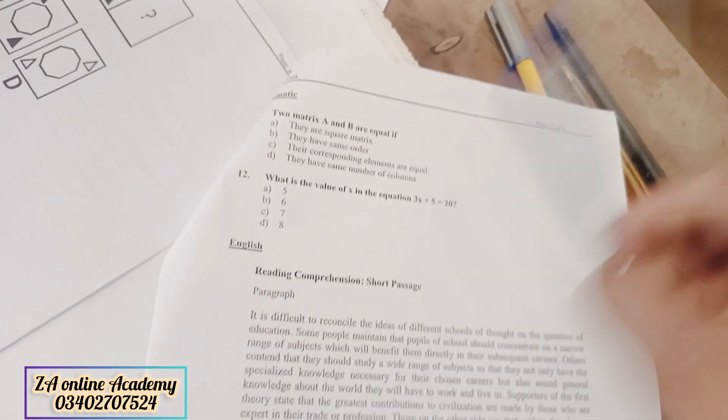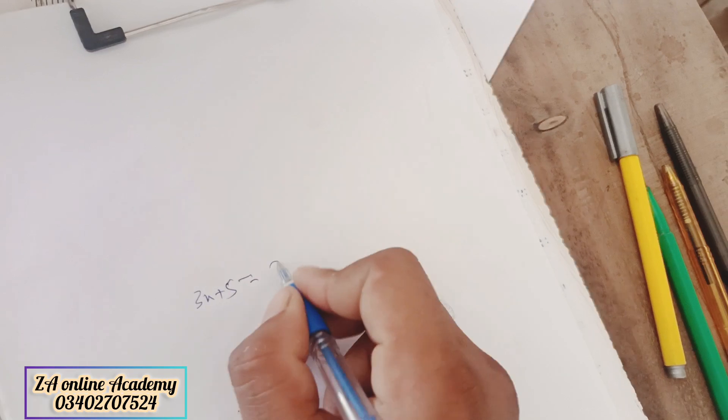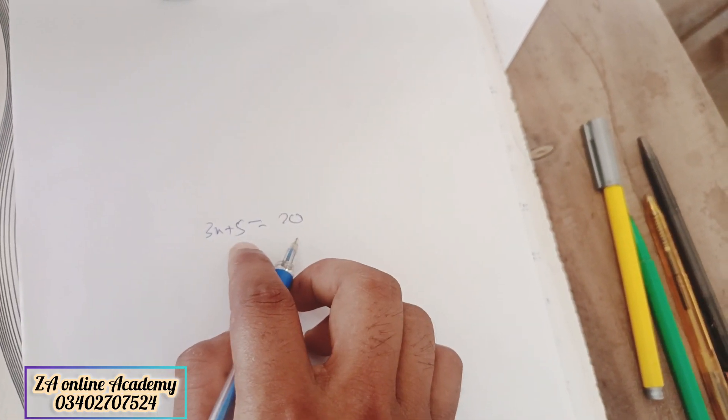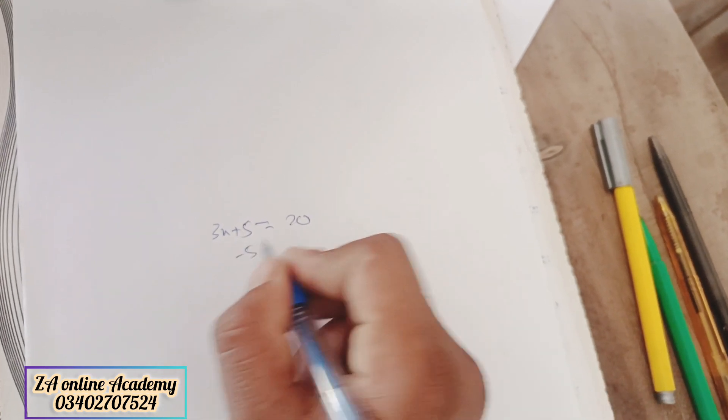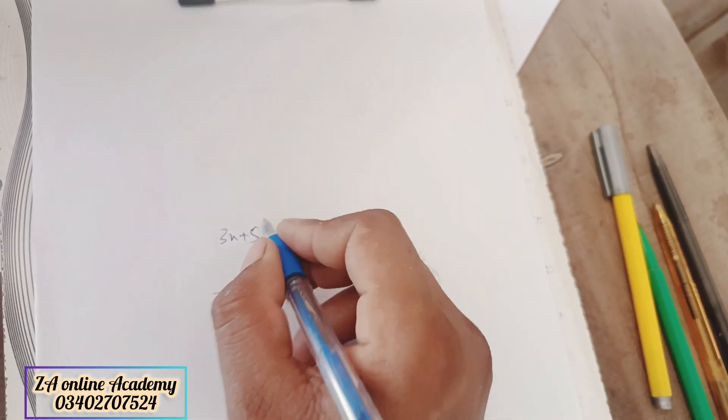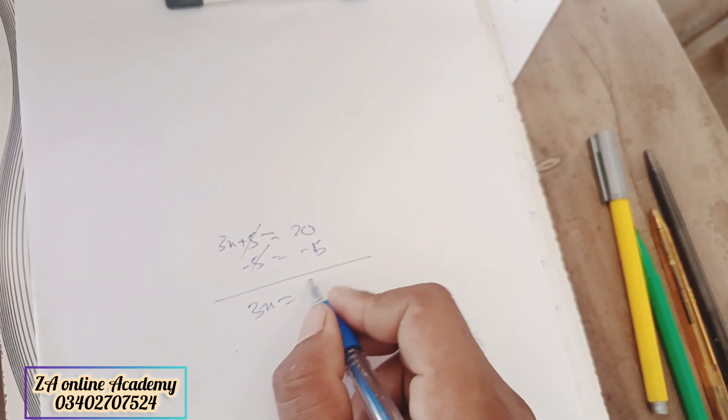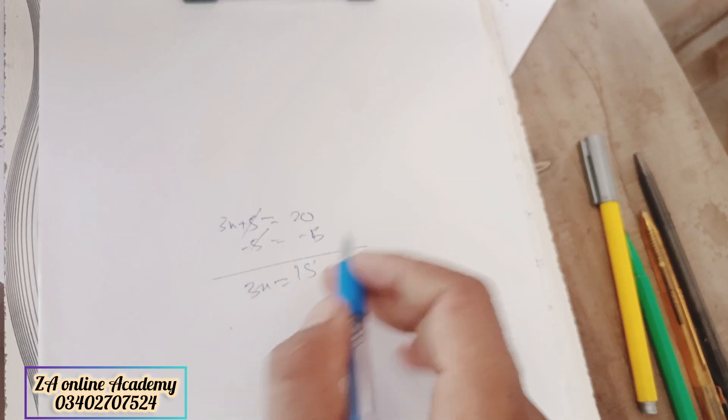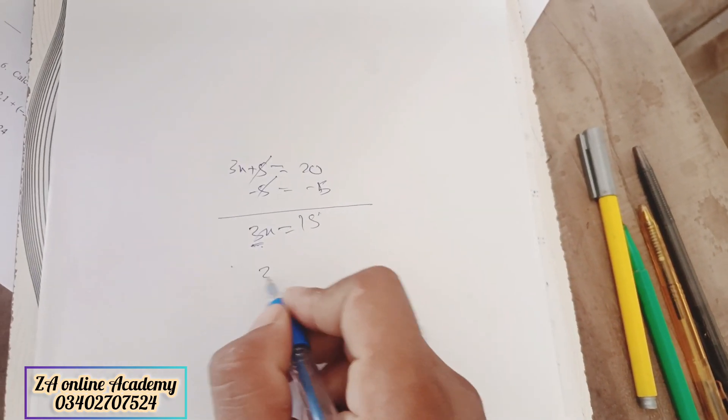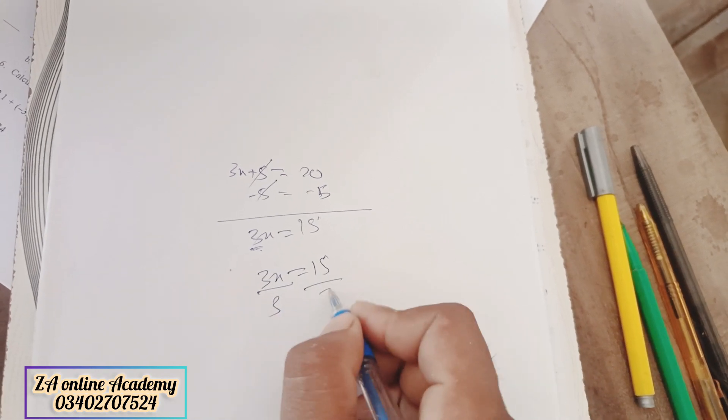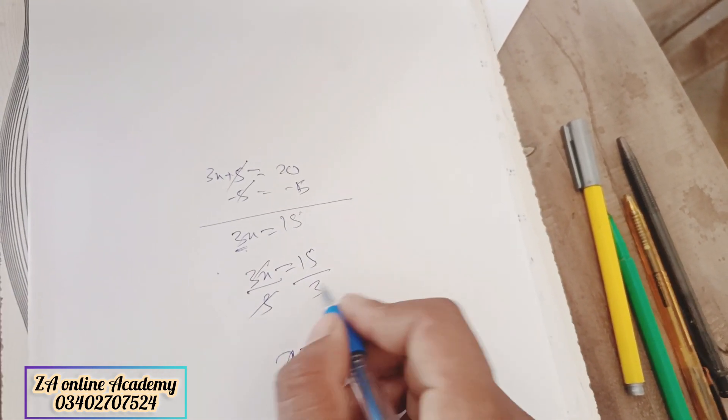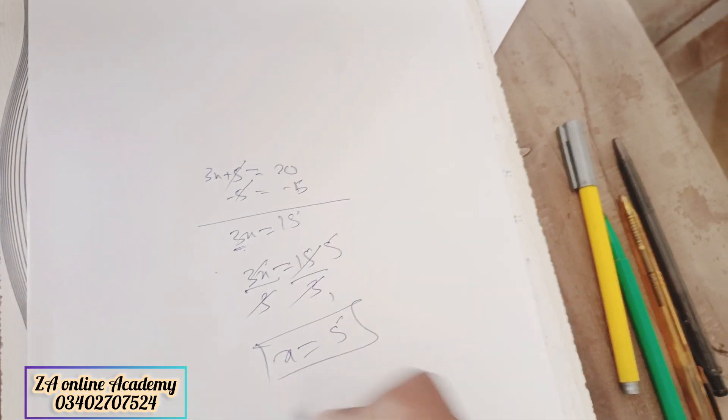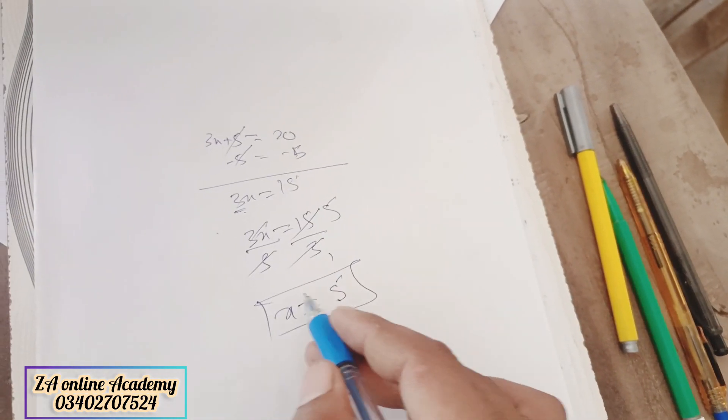This is a linear equation. Let's solve this equation. 3x plus 5 is equal to 20. First of all we will remove constant. There is a 5, we should subtract 5 from both sides. 5 cancel, 3x is equal to 15. 20 minus 5 is equal to 15. Now we have removed 3. We divide 3 on both sides. 5 times, the value of x is 5. We can say this is a solution set of this equation.